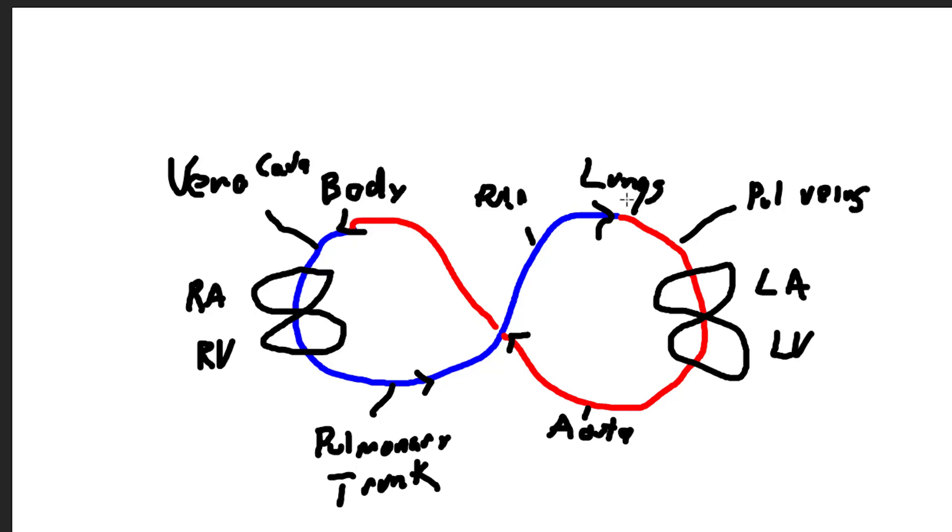Now a couple other things we can add to really think about the blood flow is where the valves exist. Between the right ventricle and pulmonary trunk would be the pulmonary valve. Between the left ventricle and aorta would be the aortic valve.